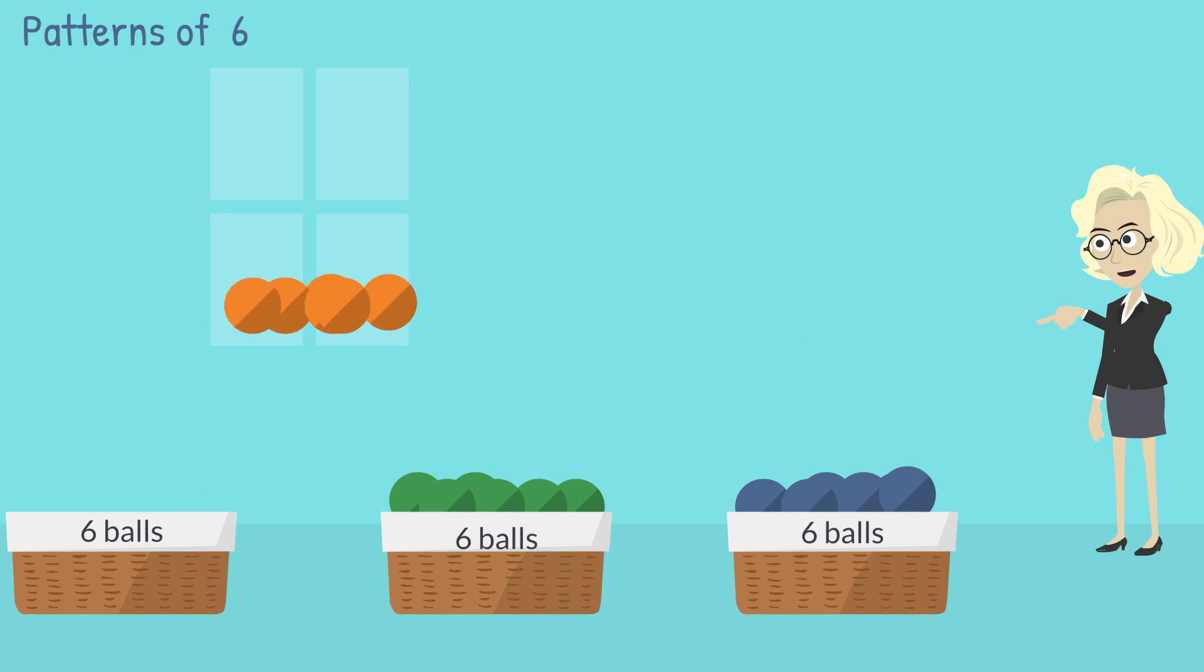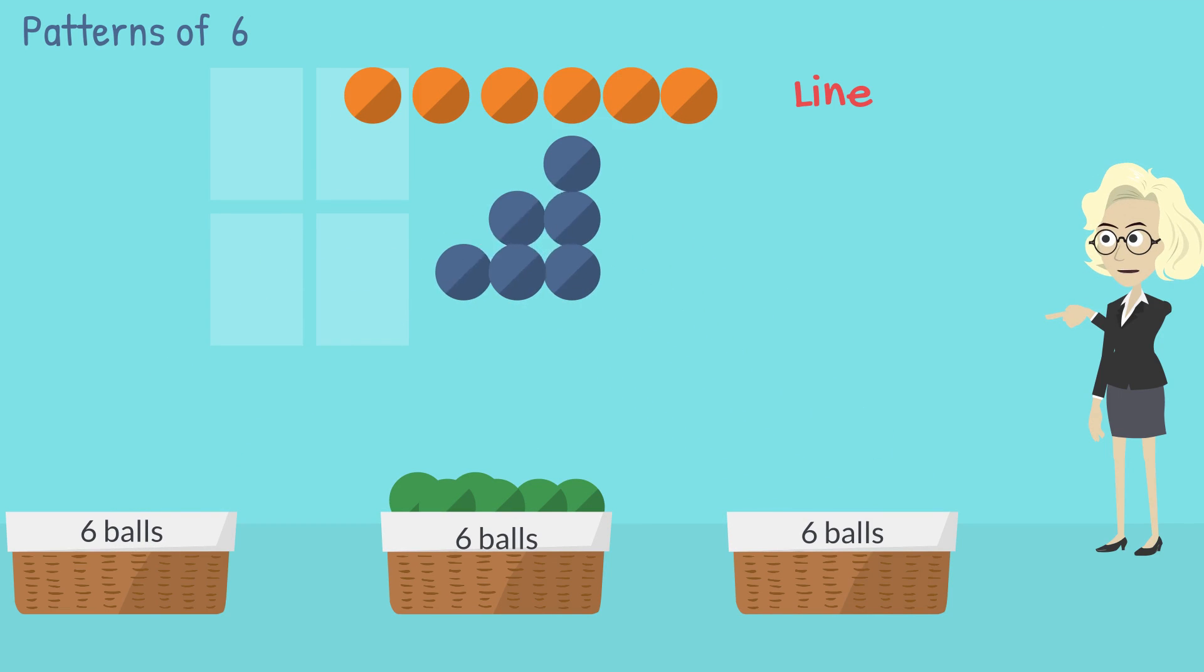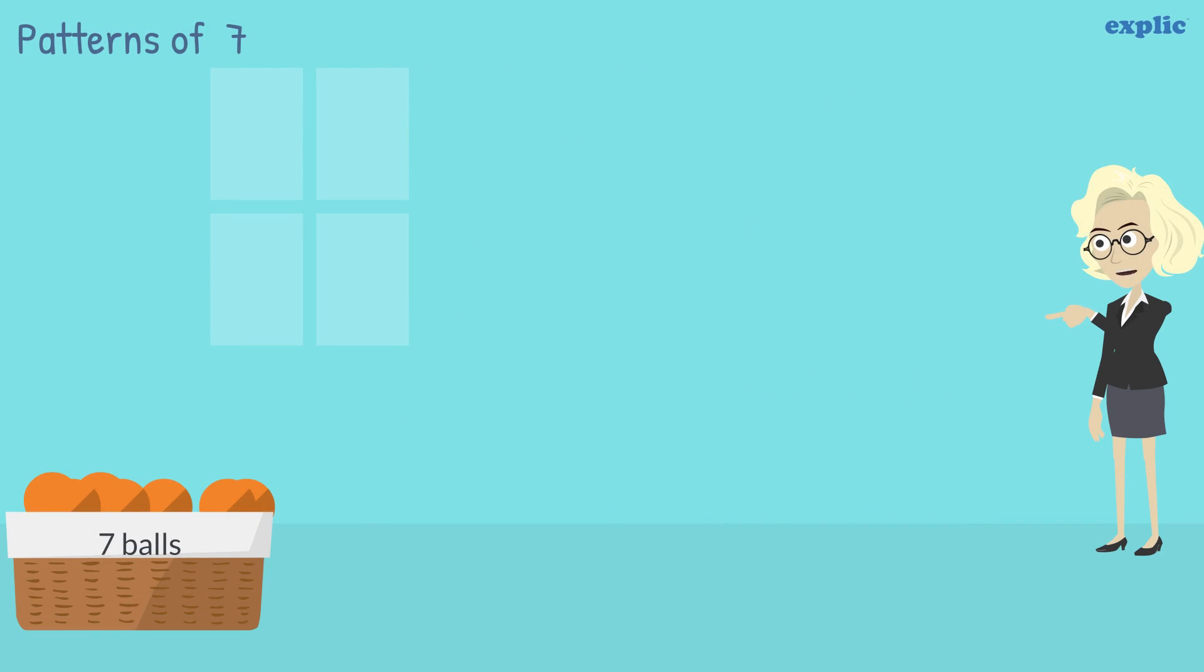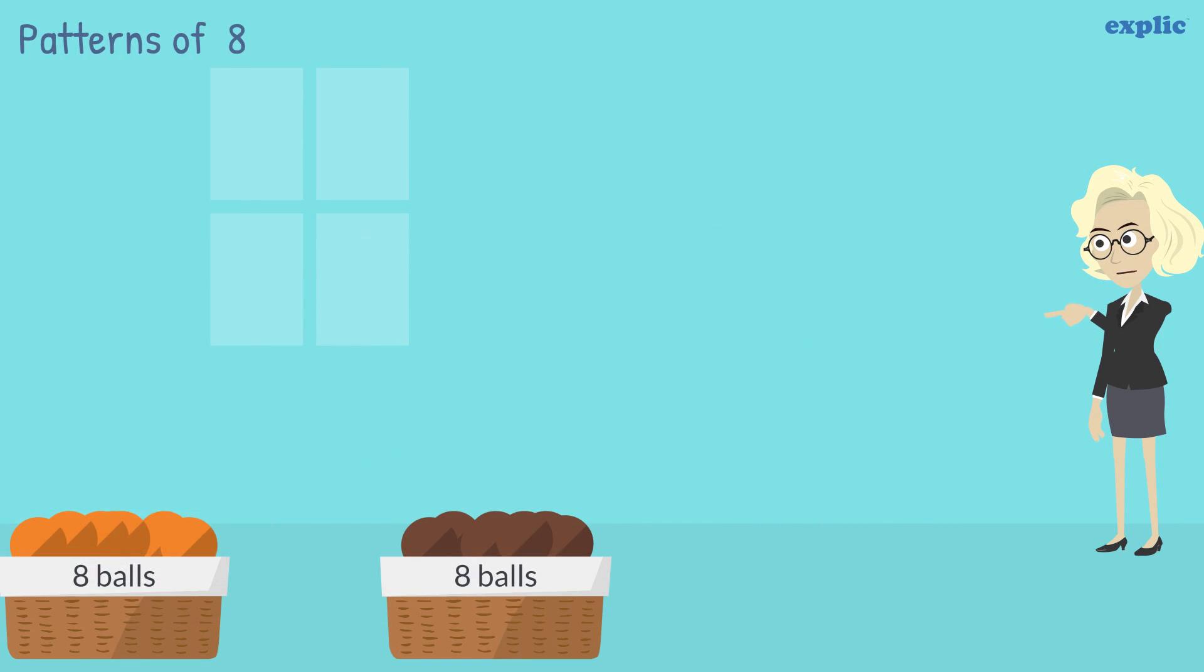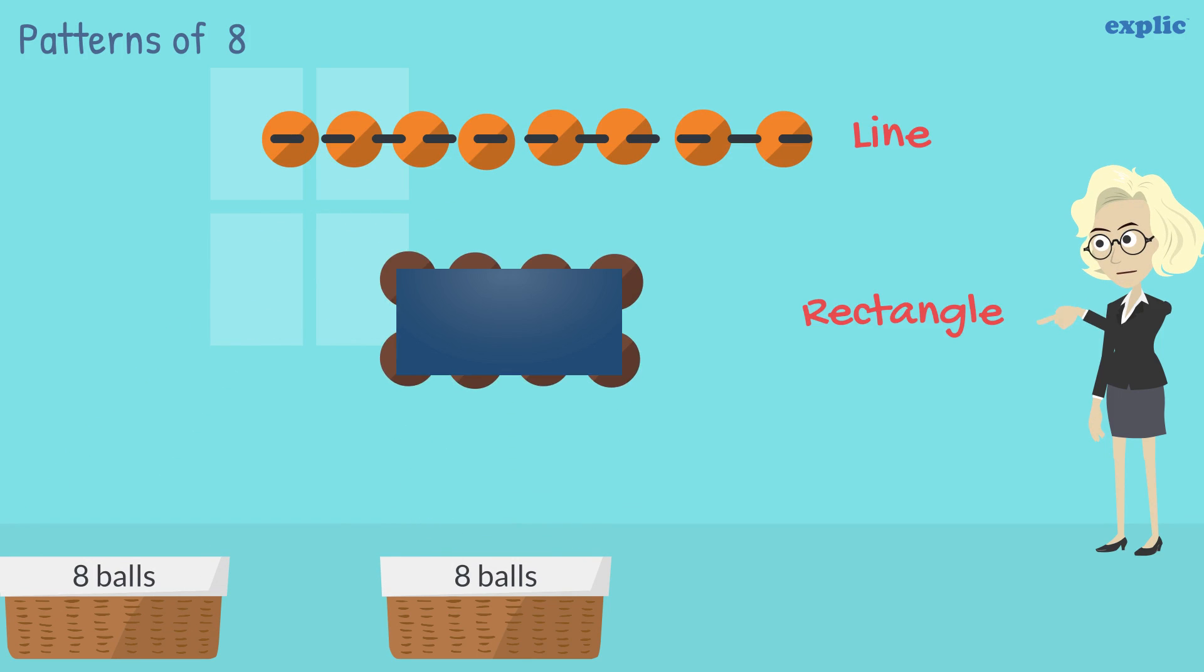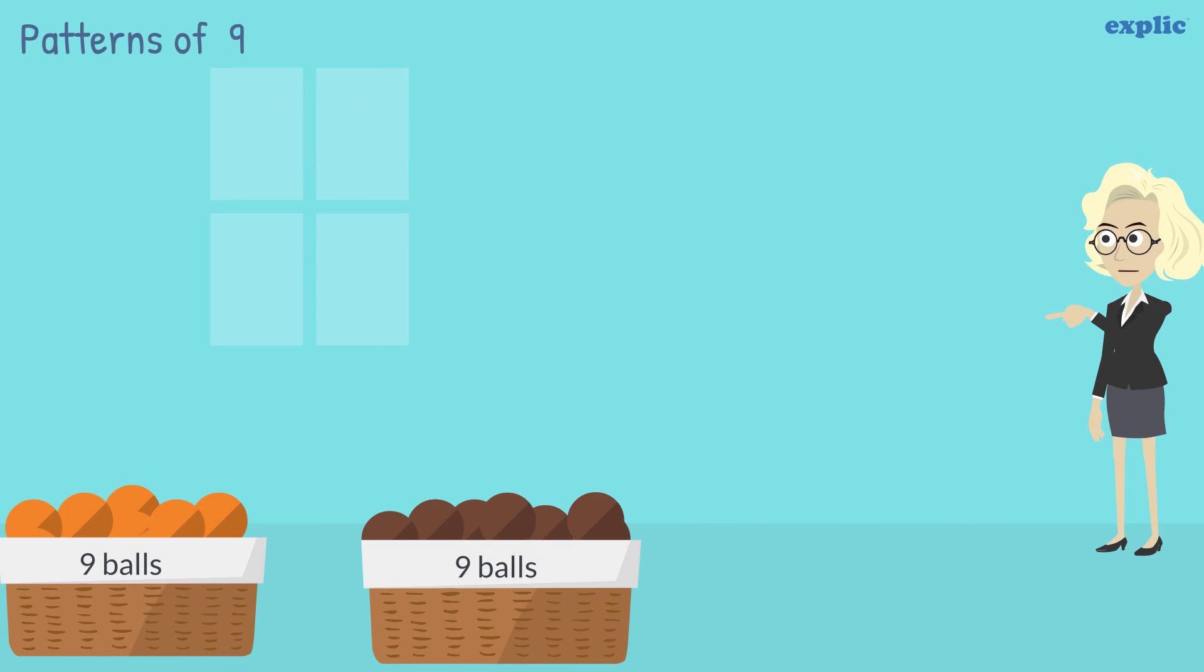Similarly, number 6 can be arranged in a line, in a triangle and in a rectangle. Number 7 can be arranged in a line only. Number 8 can be arranged in a line and a rectangle both. Number 9 can be arranged in a line and a square.